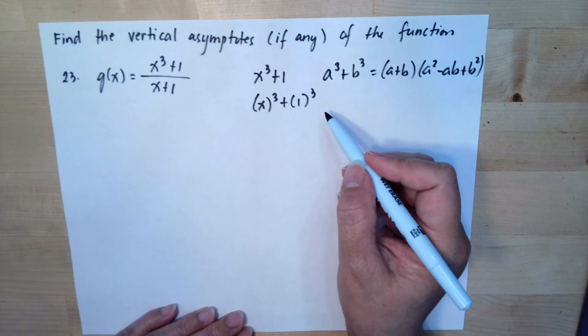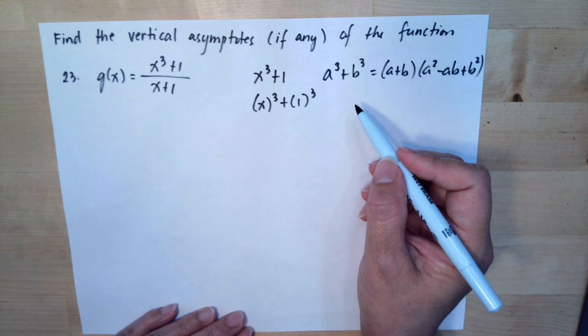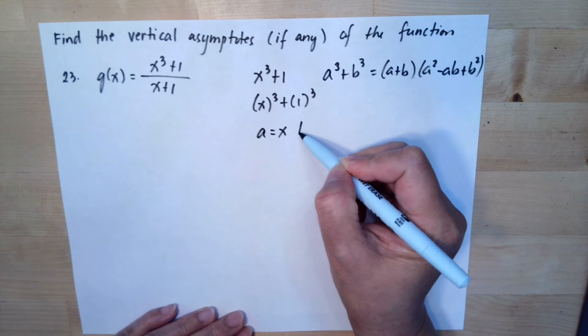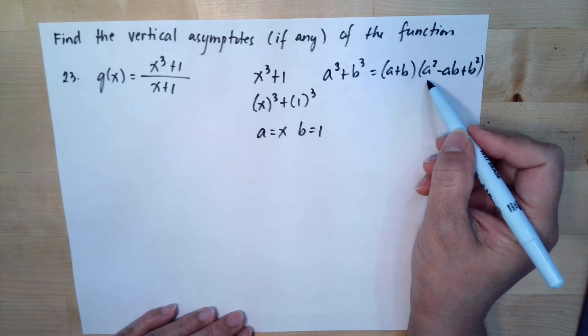Anyway, 1 multiplied by 1 is 1 multiplied by another 1 is still 1. So meaning our a is x and our b is 1. So we will follow this formula.